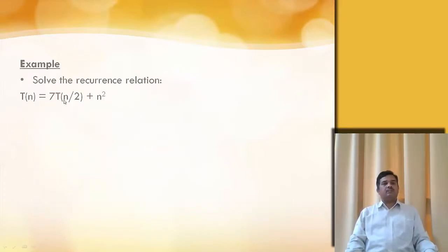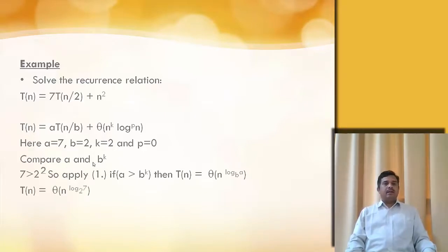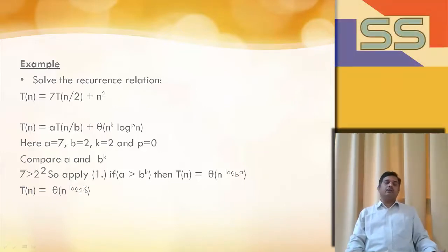Solve the recurrence relation T(n) = 7T(n/2) + n². Here, comparing with Master's Theorem, a = 7, b = 2, k = 2, and p = 0. First we compare a and b to the power k. Here a is equal to 7, and since a is greater than b^k, T(n) = Θ(n^(log base b of a)). So directly substituting, the answer becomes Θ(n^(log base 2 of 7)). Very simple if you remember the formula.